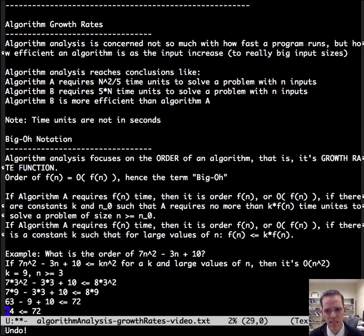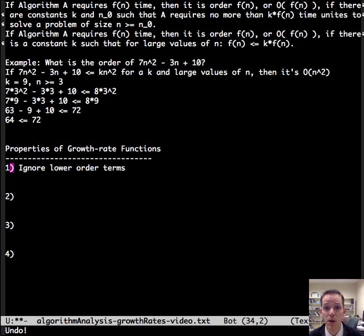And that's what we're concerned about. What is the order of it? Not necessarily is it exactly equal to it, but is it growing along the same order of it? So up until now, we've ignored some details in the video and the other ones. And so let's be more specific about what we can ignore and why more formally, what are the properties of growth rate functions? First of all, we can ignore lower order terms. For example, given what we have above, we could write order of seven N squared minus three N plus 10.